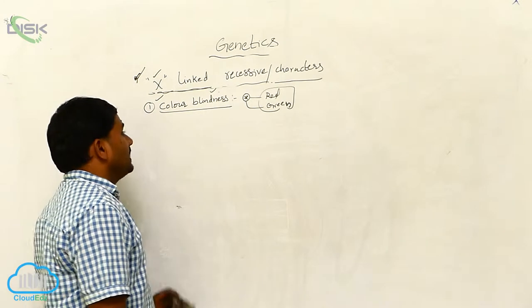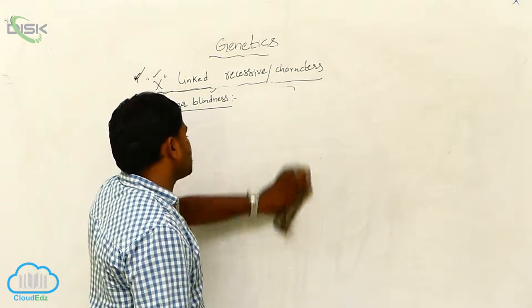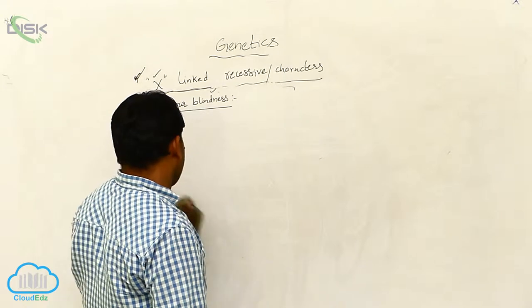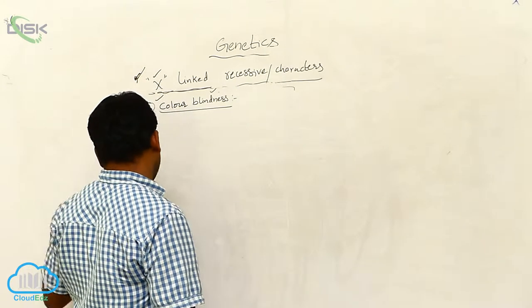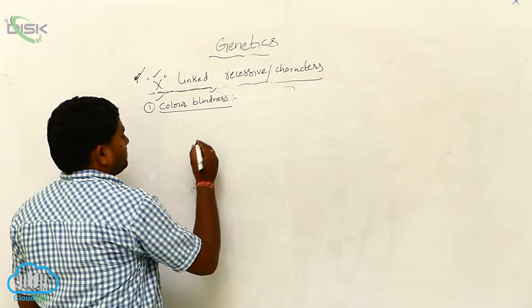Here, red color blindness and green color blindness. Let us take one example.